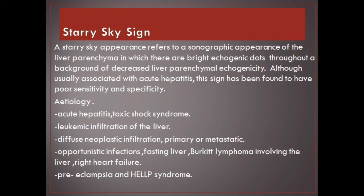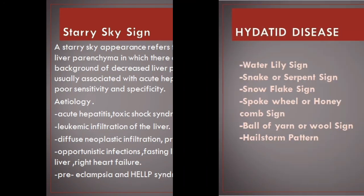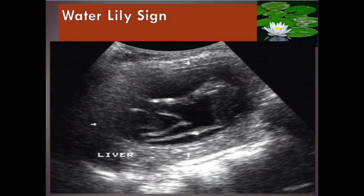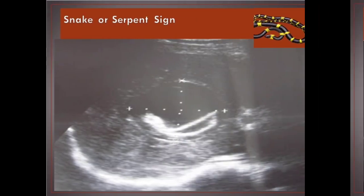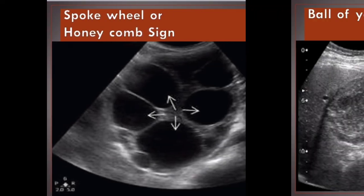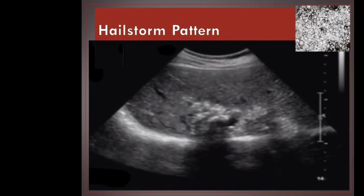Etiologies for the starry sky appearance include: acute hepatitis, toxic shock syndrome, leukemic infiltration of the liver, diffuse neoplastic infiltration (primary or metastatic), opportunistic infections, fasting liver, Burkitt lymphoma involving the liver, right heart failure, pre-eclampsia and HELLP syndrome. Hydatid disease signs include: water lily sign, snake or serpent sign, snowflake sign, spoke wheel or honeycomb sign, ball of yarn or wool sign, and hailstorm pattern.